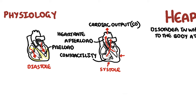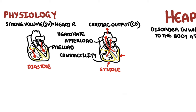The cardiac output equation can be simplified to stroke volume – the amount of blood the ventricles pump out during each heartbeat – multiplied by heart rate, which gives you the cardiac output. Contractility, afterload, and preload all affect stroke volume.